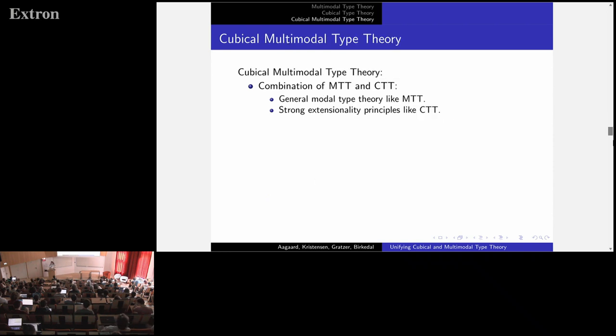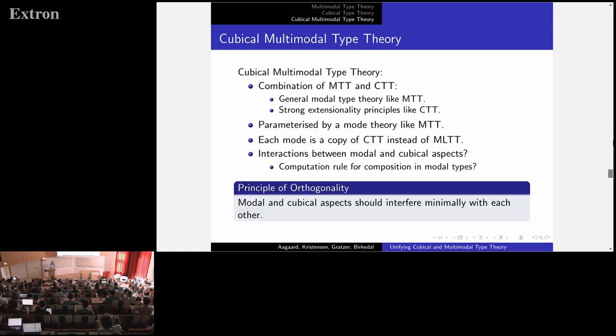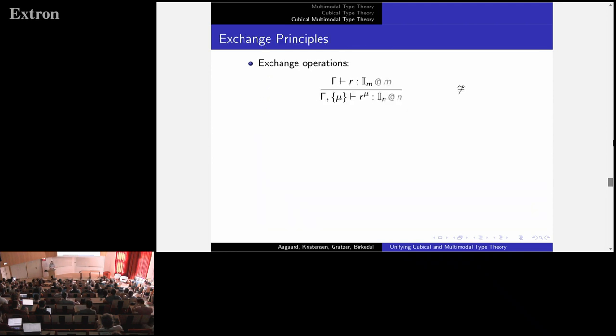Now, finally, we come to cubical multimodal type theory, which is a combination of MTT and CTT. It's a general modal type theory like MTT, whilst having the strong extensionality principles of CTT. Then it's parameterized by a mode theory, but now each mode contains a copy of CTT instead of Martin-Löf type theory. The question then is, how should modal and cubical aspects interact with each other? Of particular importance, we need a computation rule for composition in modal types. And with what we have here, trying to write that rule is not going to lead to a well-typed rule. Our solution to this is what we call the principle of orthogonality, saying that modal and cubical aspects should interfere minimally with each other. They should be orthogonal.